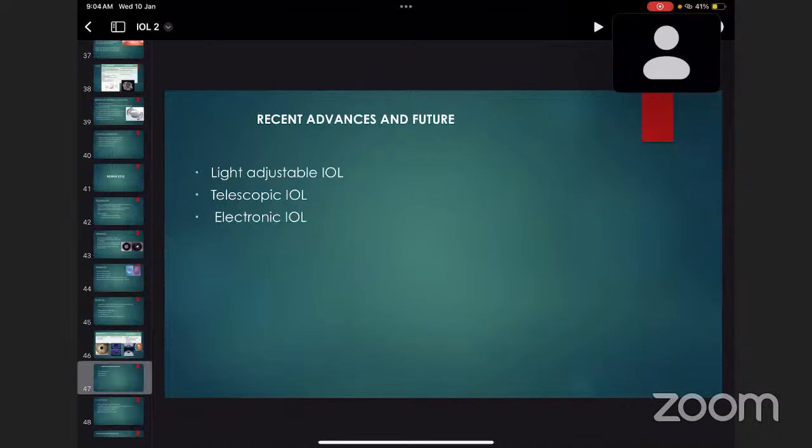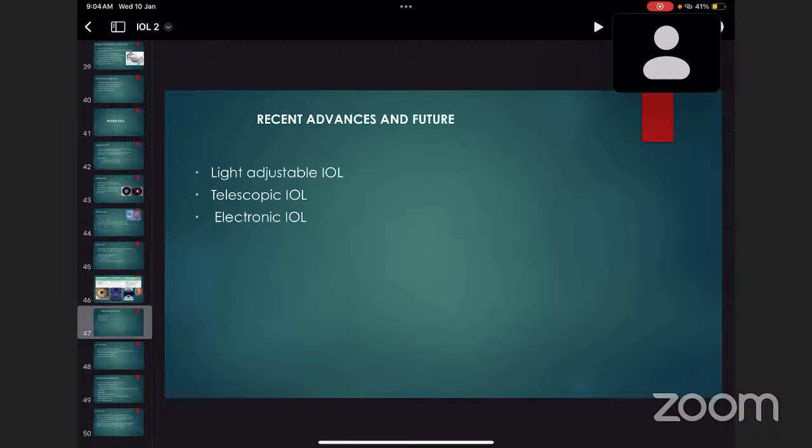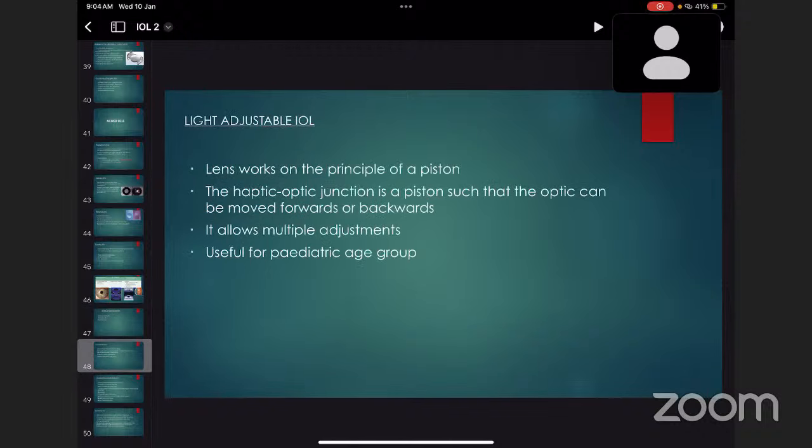Recent advances and future of IOLs include three IOLs: light-adjustable intraocular lenses, telescopic intraocular lenses, and electronic intraocular lenses. Light-adjustable intraocular lenses: this lens works on the principle of a piston. The haptic-optic junction is a piston such that the optic can be moved forwards or backwards. It allows multiple adjustments and is useful for the pediatric age group.